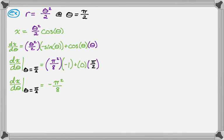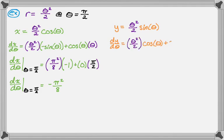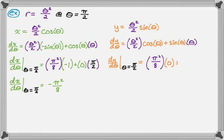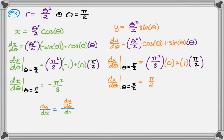Now for y: y equals r sine theta, substituting for r and applying the product rule gives us first times cosine plus second times derivative of the first. Evaluating at pi over two, we get pi squared over eight times zero plus one times pi over two, which cleans up to pi over two. So dy/dx equals dy/dθ over dx/dθ, which is pi over two divided by negative pi squared over eight, giving negative four over pi. It's a strange slope, but it's a strange curve.